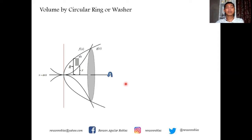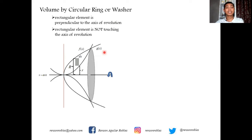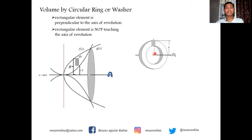We will apply the circular ring or washer method whenever the element chosen is perpendicular to the axis of revolution and the rectangular element is not touching the axis of revolution. Similar to the previous video, we divide this solid into infinitely many rings or washers, each with an inner radius, outer radius, and width equal to Δx or dx.